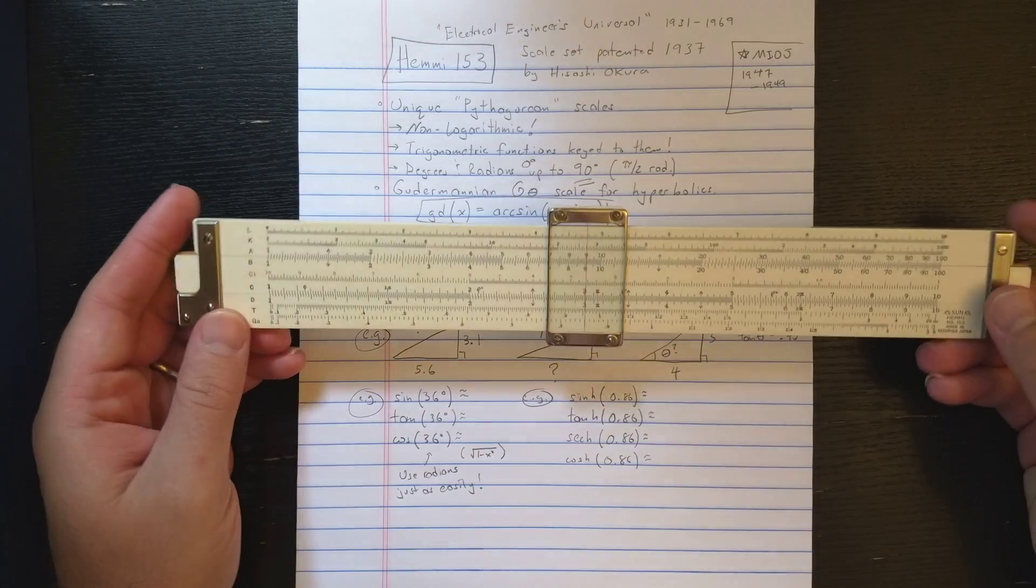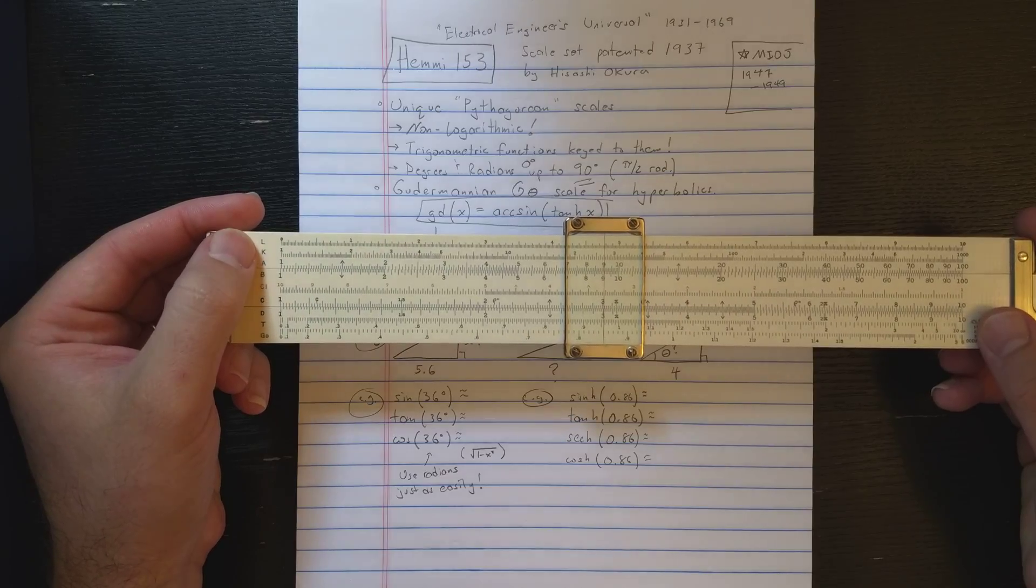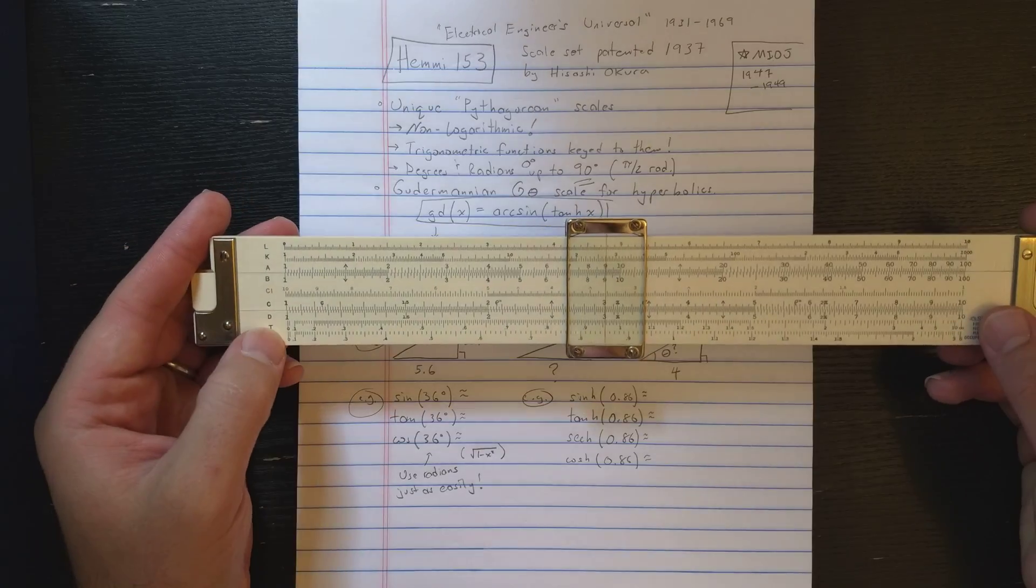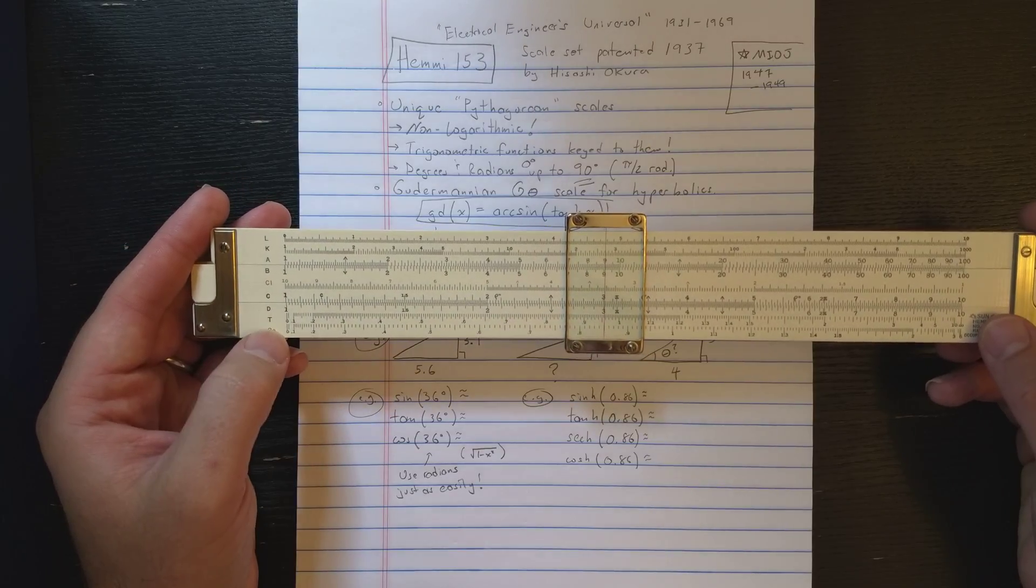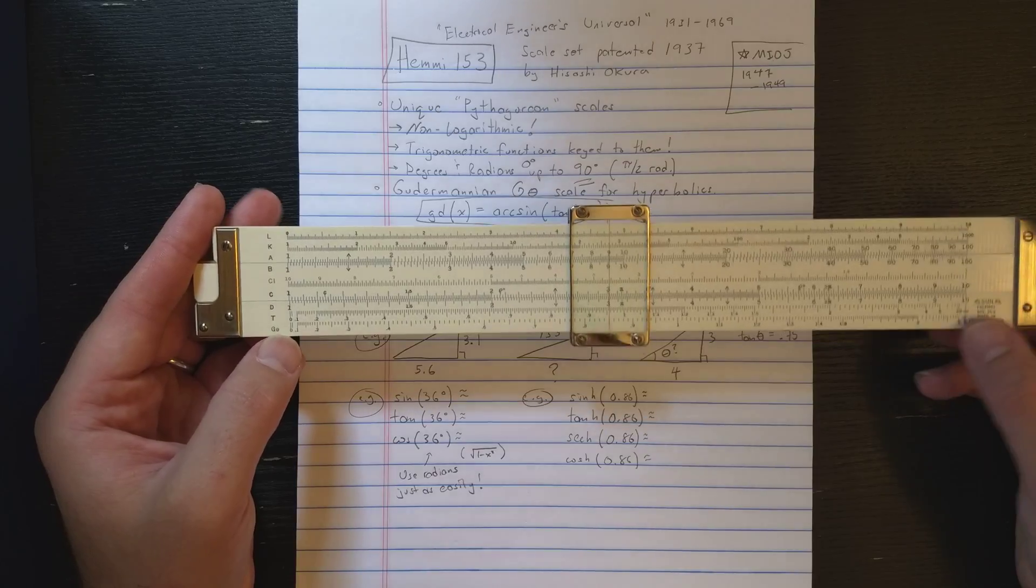Okay, if you look at the front of this slide roll, it has a pretty standard scale set: L, K, A, B, C, I, C, D. Pretty standard. But then you have T, although this is not the normal T scale, this strange G-theta scale.